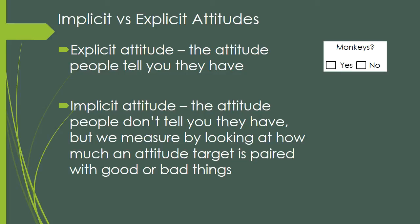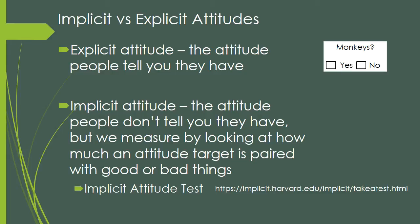So it's not that the implicit attitude is a hidden attitude. It's just that it is much harder to measure, and we measure it with the Implicit Attitude Test. It would take at least 10 minutes to explain how the IAT works, so it would be much faster for you to just go online and take one of their implicit attitude tests, and you will completely understand how the IAT works.